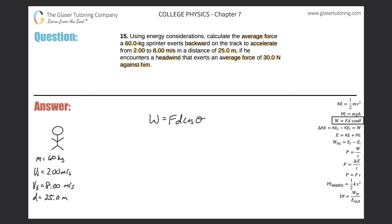Now consider the work-energy theorem. That basically says the change in kinetic energy of an object equals the work performed on that object. In other words, we can rewrite that as: the change in kinetic energy equals one-half m multiplied by the final velocity squared minus the initial velocity squared, and that equals the work.